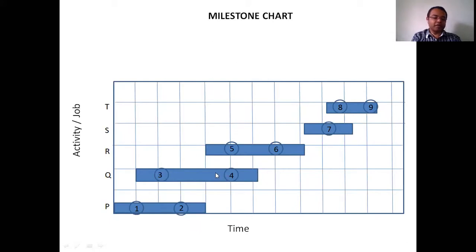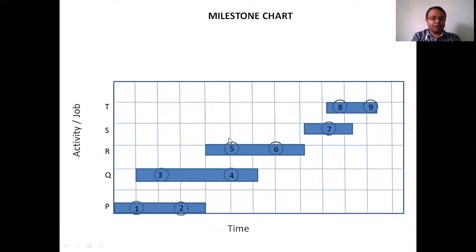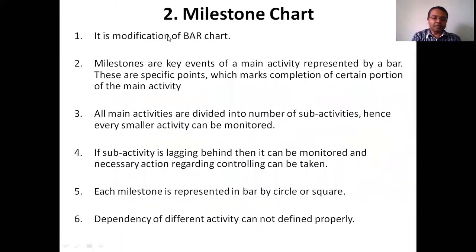Within a single activity like Q, you can show the dependency or sequence — to reach the fourth milestone, you must reach the third milestone first. But in the case of milestones four and five starting simultaneously across different activities R and Q, it doesn't show any dependency between them. It doesn't mean that five is dependent upon four. So in the milestone chart, dependency of different activities across different bars cannot be shown properly — and this is again one of the key disadvantages of the milestone chart.